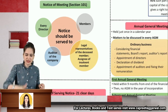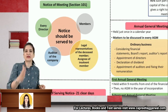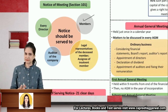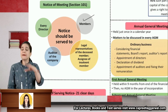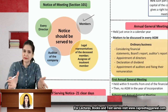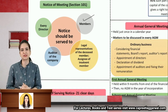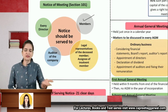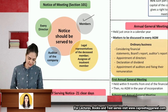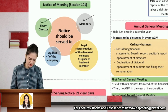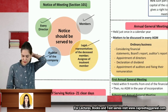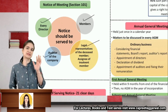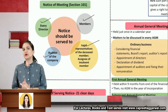Notice will be served to every member — equity as well as preference shareholders. Preference shareholders can attend the meeting but can vote only on resolutions that concern them, unless dividend has not been paid for two or more years. Notice will also be given to every director, auditor of the company, legal representative of a deceased member, and assignee of an insolvent member — who will attend and vote only in their respective capacity.